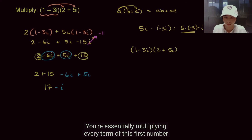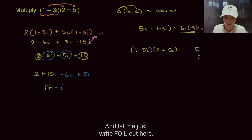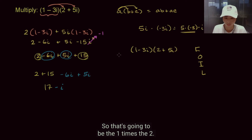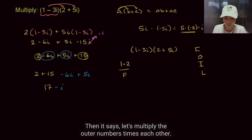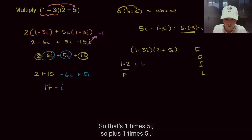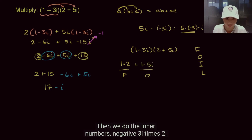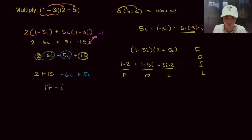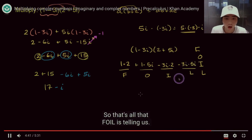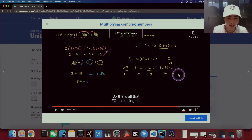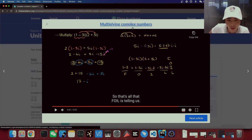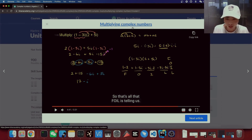You could also use FOIL: multiply the First terms (1 times 2), the Outer terms (1 times 5i), the Inner terms (negative 3i times 2), and the Last terms (negative 3i times 5i). FOIL is just a formula I learned in my Chinese classroom — they told us the rule but never told us why. It's a formula to memorize, and it doesn't give you the idea behind the general distribution rule.